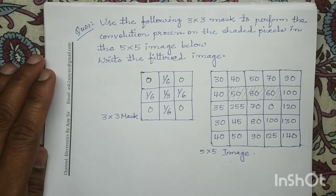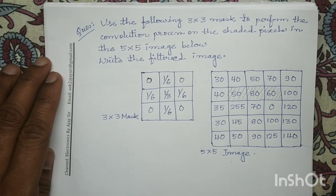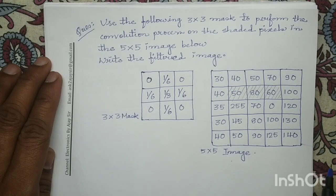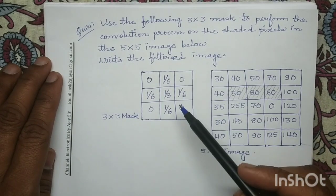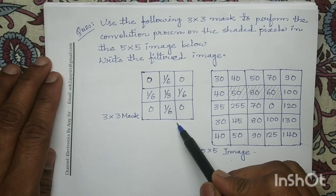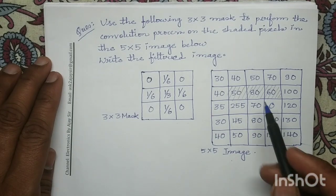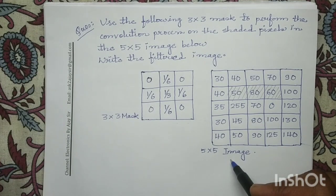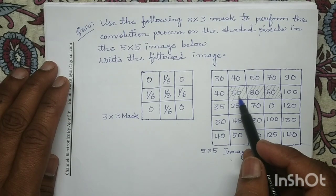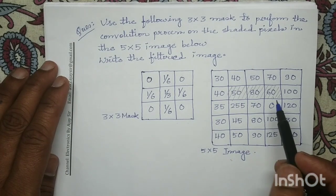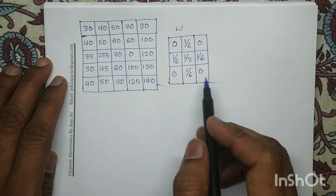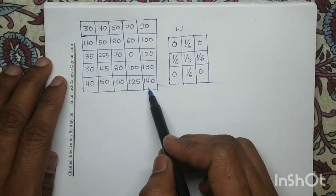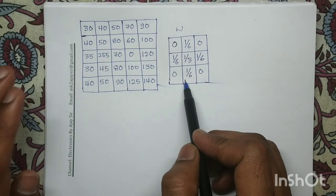Good morning all. Today we will solve a numerical question on convolution operation. In this question, we will perform the convolution operation using a 3x3 mask on the shaded pixels of a 5x5 image, and we have to determine what is the output pixel value for these shaded pixels after performing the convolution operation. This is my input image and this is the mask which is given to us.